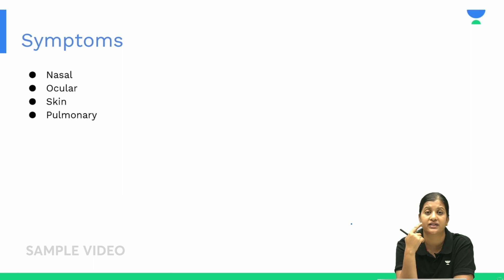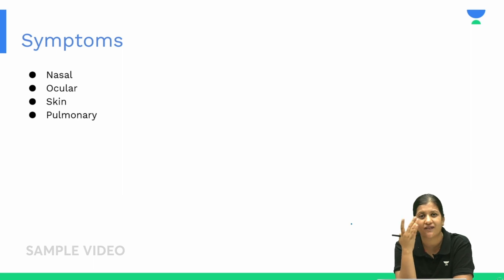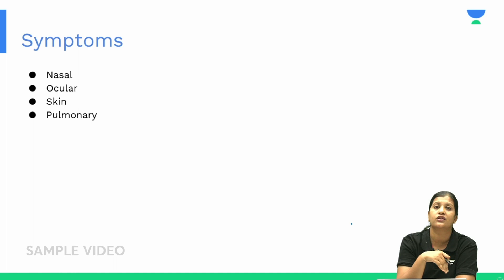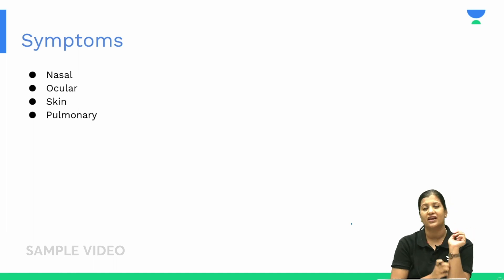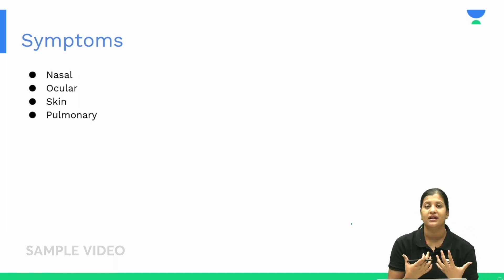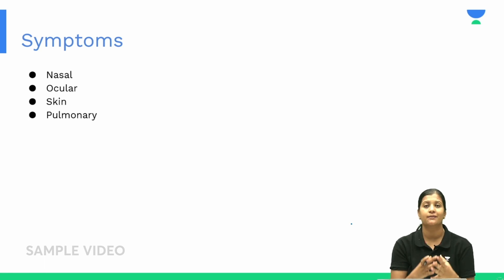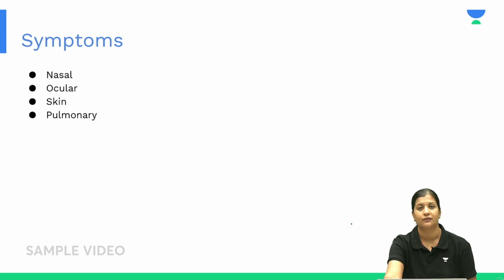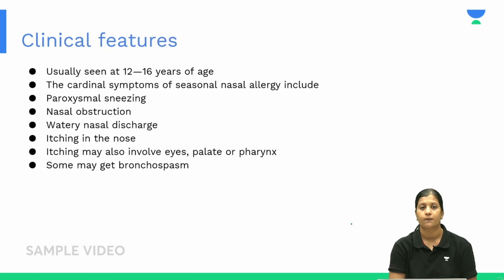Ocular allergy causes itching in the eyes and constant tearing. Skin allergy causes an itchy feeling on the skin. Pulmonary allergy can lead to bronchospasm. These are all commonly seen in the community.